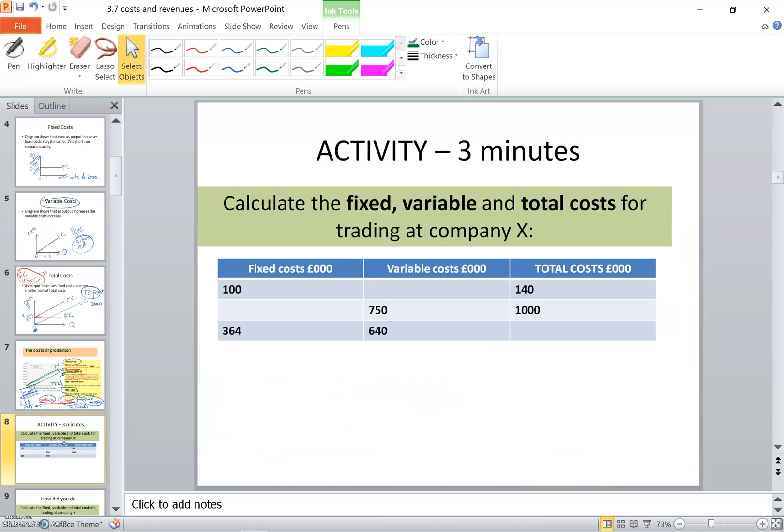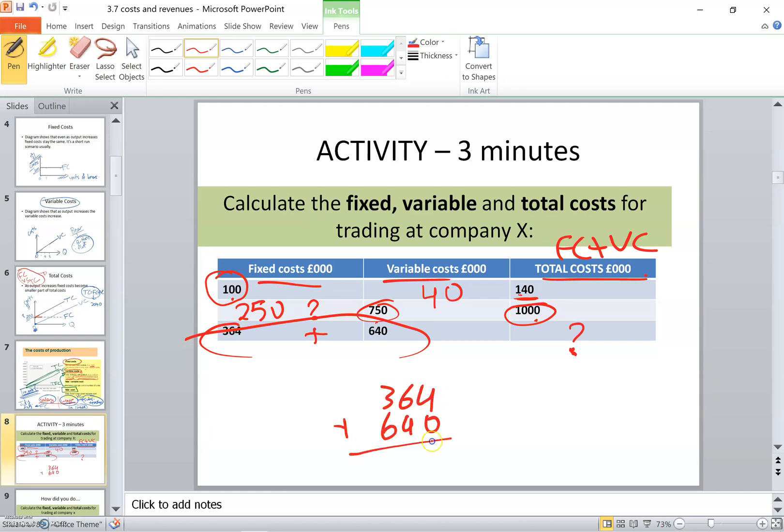Let's solve this little exercise. Calculate the fixed, variable, and total cost for trading at company X. They gave us fixed cost, variable, and total. As I know, the total is fixed cost plus variable cost. So here I have 140 as a total cost, and they gave me the fixed cost as 100. What will my variable cost be at that point? 140 minus 100, it would be 40. Here, the total cost is given and the variable cost is given. I have to find my fixed cost. So what plus 750 gives me 1000? My answer here will be 250. Total costs, I need to find it very easy. I need to add fixed and variable cost together. So 364 plus 640, it will be 1004.